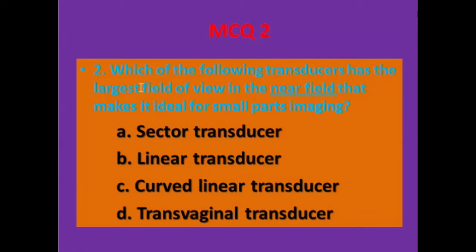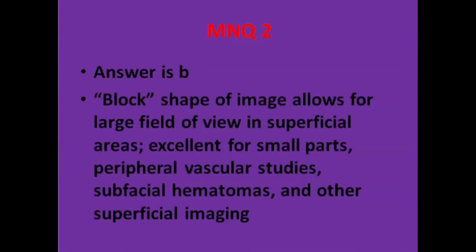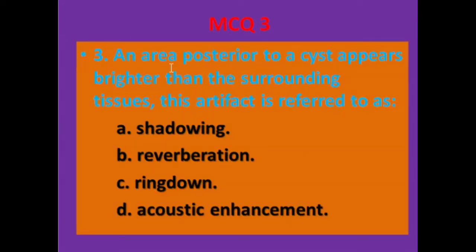Question number two: which of the following transducers has the largest field of view in the near field, making it ideal for small parts imaging? Options: A: sector transducer, B: linear transducer, C: curved linear transducer, D: transvaginal transducer. The answer is B. Its block shape allows for a large field of view in superficial areas — excellent for small parts, peripheral vascular studies, subfascial hematomas, and other superficial imaging.